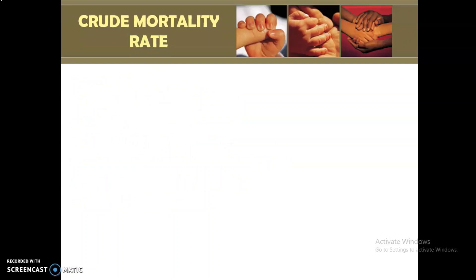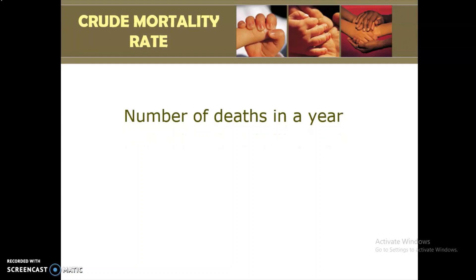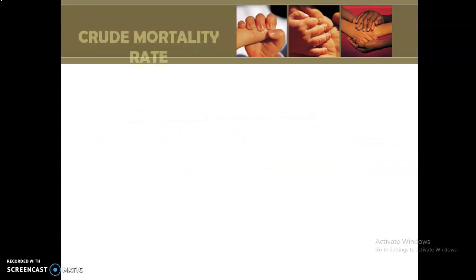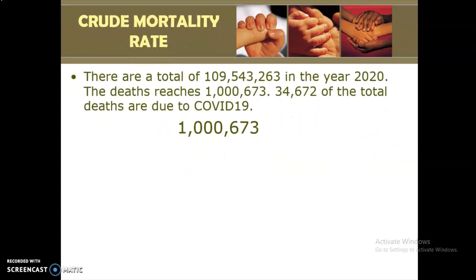For the crude mortality rate, this covers deaths in the general population. The formula is: the number of deaths in a year over the mid-year population, times 1,000 as the constant number. As mentioned in the first video, mid-year population refers to the estimated population as of July 1 of the same year.